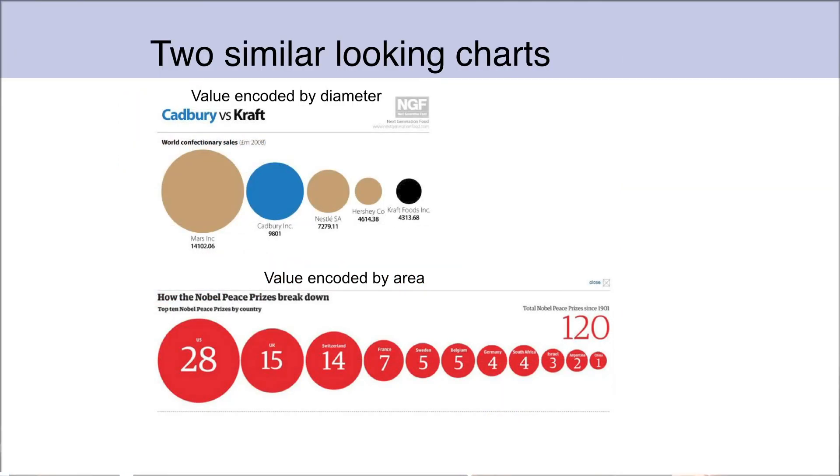Here are two figures. They look very similar. We see a bunch of circles in size order in both of them. But in the top one, the candy, the data is encoded in the diameter. In the bottom one, it's encoded in the area. Which do you think makes more sense?